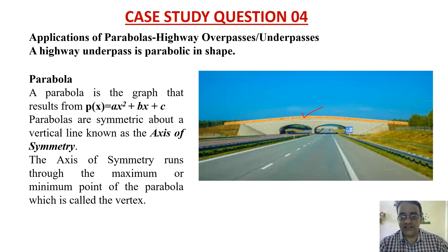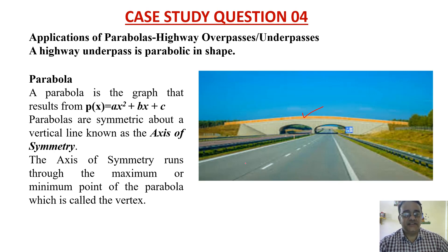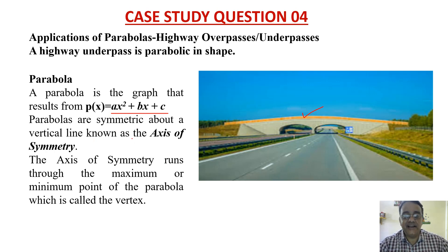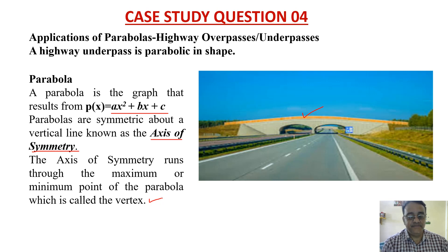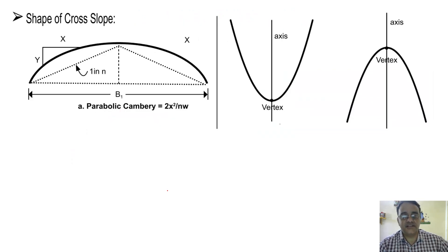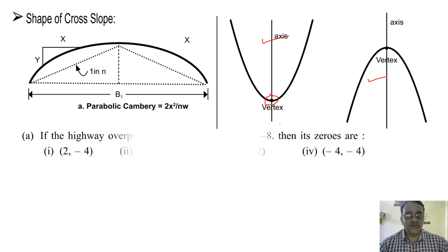This is a downward parabola shape. A parabola is the graph that results from P of x equals ax squared plus bx plus c. Parabolas are symmetric about a vertical line known as the axis of symmetry. The axis of symmetry runs through the maximum or minimum point called the vertex. This figure shows the vertex and axis — an upward and a downward parabola.